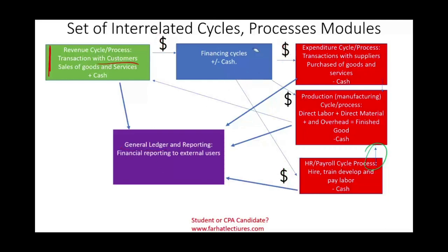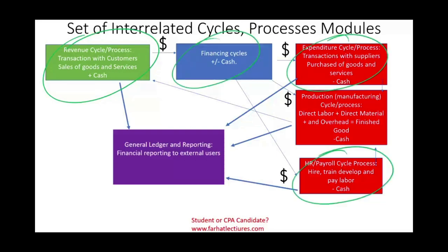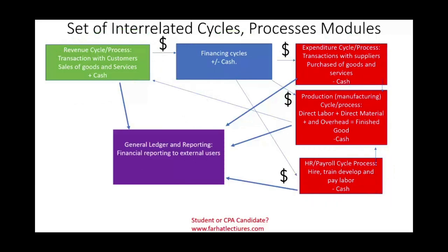The general ledger and reporting cycle is where we prepare the financial statements. This is a general overview of how these cycles interrelate — it's not as simple as accounting 101 suggests, but this is the core idea. Software like QuickBooks, for example, separates these cycles as distinct modules: revenue, financing, expenditure, and payroll cycles. Going forward, each cycle will be covered separately, explaining the controls, risks, and what to look out for. Practice with multiple choice and true/false questions to reinforce the material. Good luck, study hard, stay safe, and stay motivated.